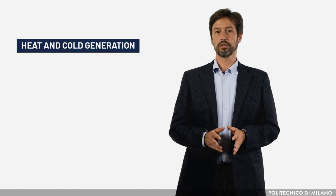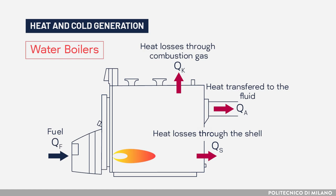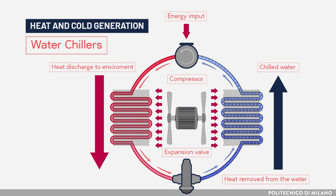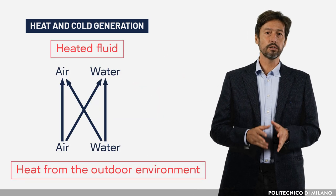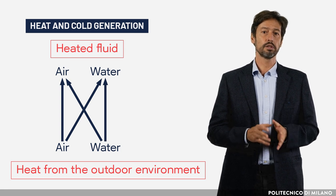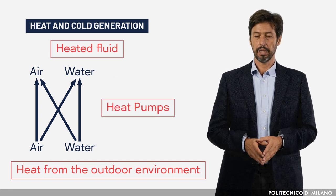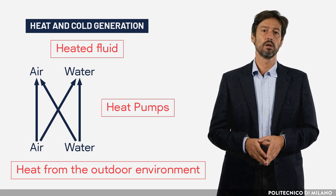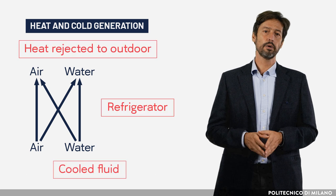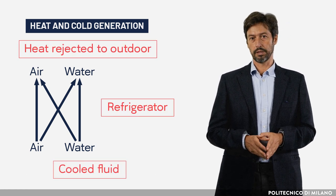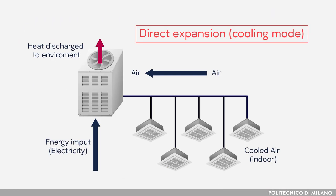Heat and cold generation are provided by water boilers fed by fossil or natural fuels, possibly assisted by solar thermal plants; water chillers fed with electricity or heat, possibly assisted by solar PV or thermal plants; air-to-water, air-to-air, water-to-water, or water-to-air heat pumps fed with electricity or heat, possibly assisted by solar PV or solar thermal plants, which can also operate in reverse mode providing cooling. Additionally, direct expansion chillers or heat pumps are used for refrigerant expansion or compression.